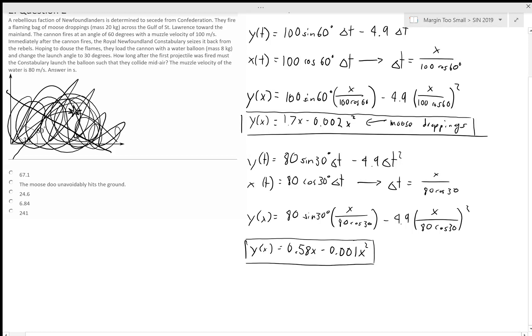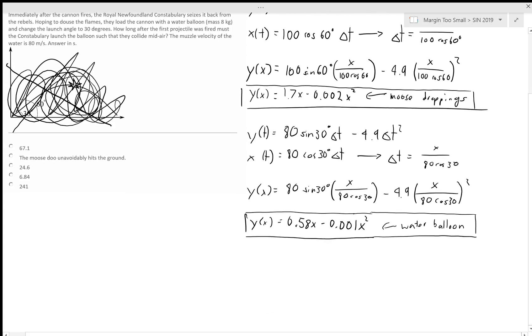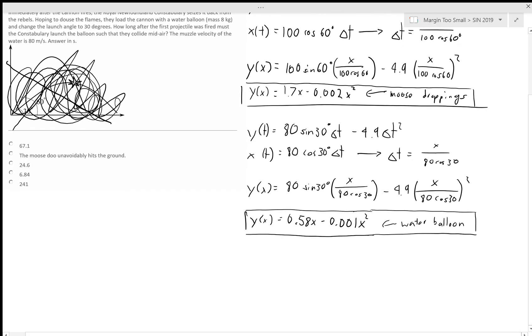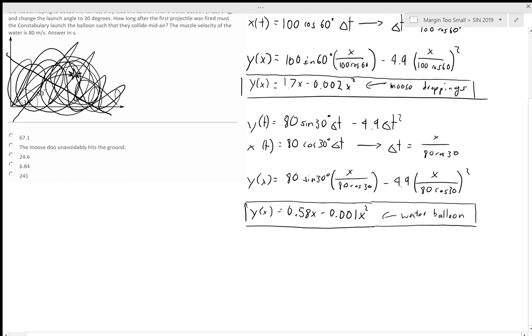We can graph this out right now for the water balloon. If you're good at graphing quadratics, but I'm not so good at graphing quadratics. But I have a hunch that these two physical trajectories might not intersect in the first place. So let's try to find their intersection point.